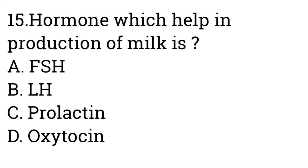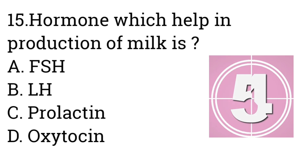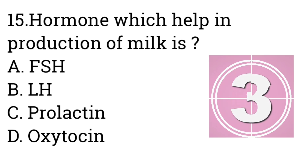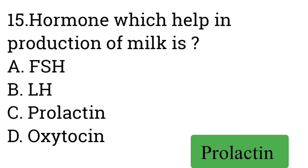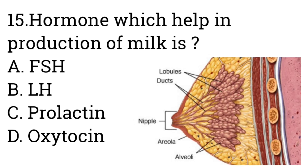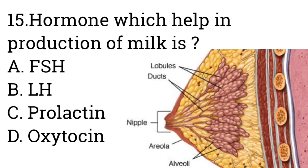Question number fifteen: The hormone which helps in the production of milk is — A: FSH, B: LH, C: Prolactin, D: Oxytocin. Answer is Prolactin. Prolactin is necessary for the secretion of milk by alveolar tissue and stimulates cell growth and development of mammary tissue.